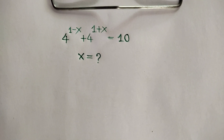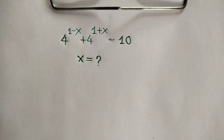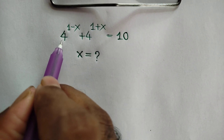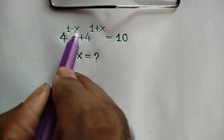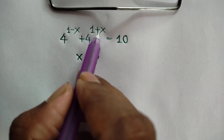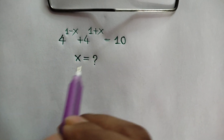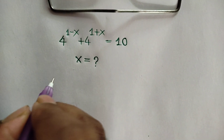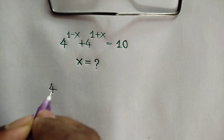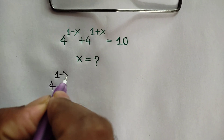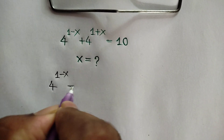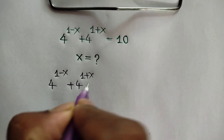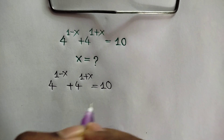Hi everyone. In this video I am going to show how to find the value of x where 4 to the power 1 minus x plus 4 to the power 1 plus x is equal to 10. We have given 4 to the power 1 minus x plus 4 to the power 1 plus x is equal to 10.